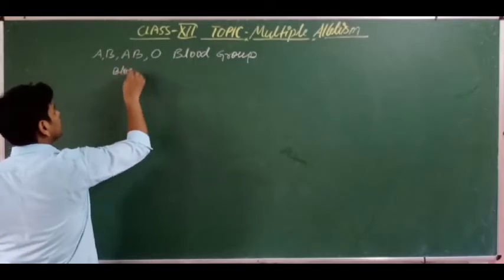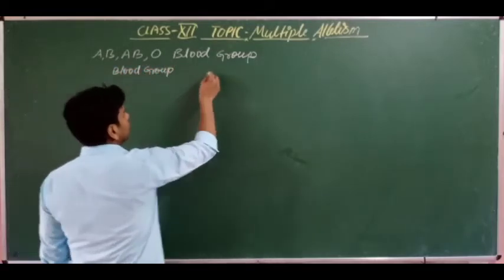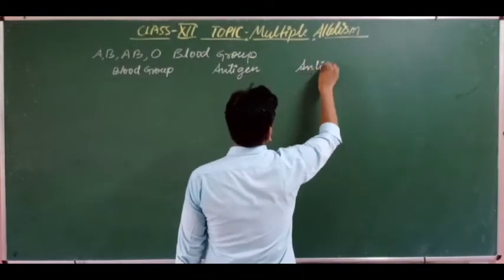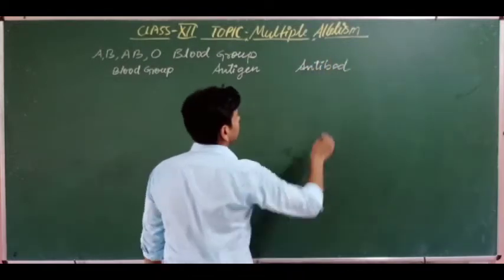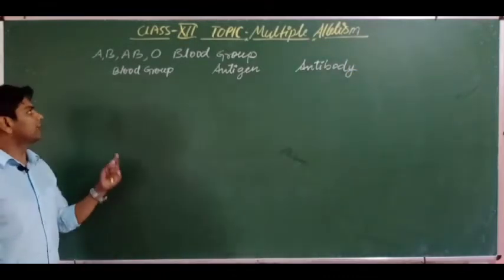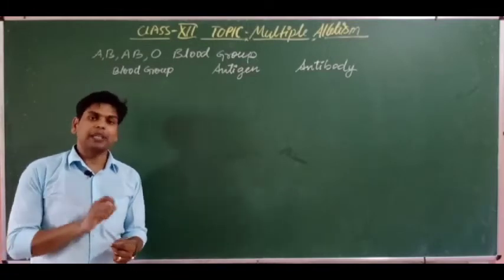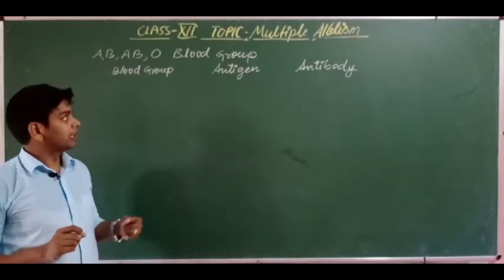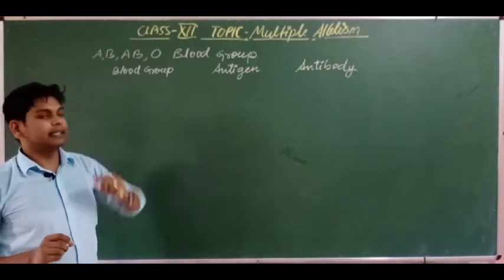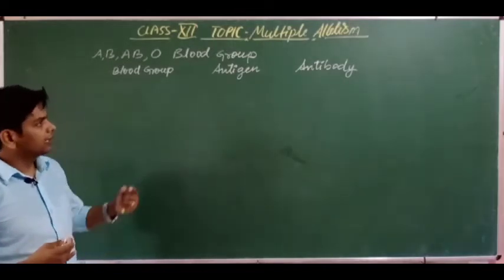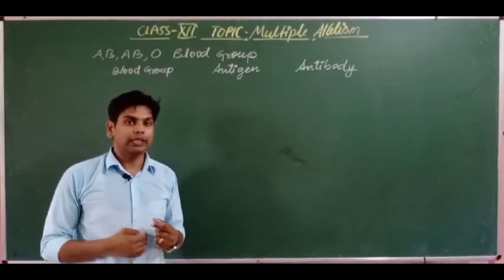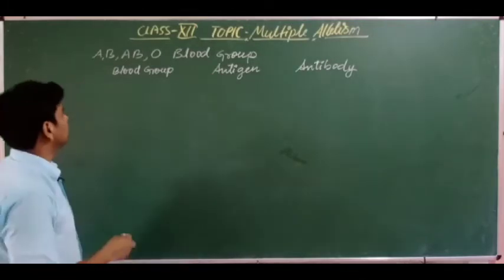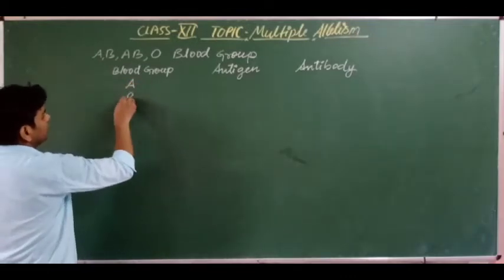Let's look at the classification table of blood groups with antigen and antibody columns. An antigen is a specific chemical compound present on the surface of RBCs. An antibody is a special type of protein formed by the immune system in response to an unknown antigen.